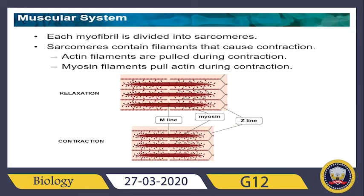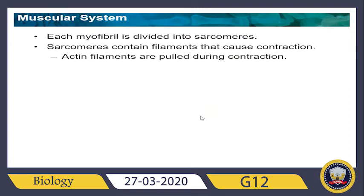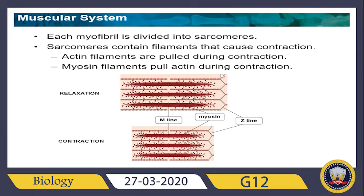We have the M line at the center and the Z line on the sides. The myosin is shown in dark red and the actin is the thinner filament. Actin and myosin, together with the Z line and M line, compose the sarcomere. During contraction, the actin moves toward the M line, causing the myosin filaments to pull actin inward.